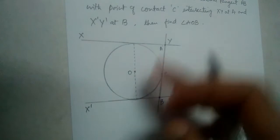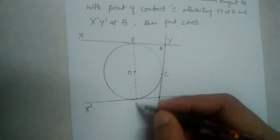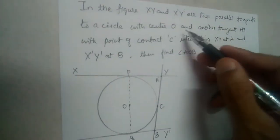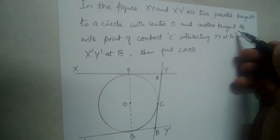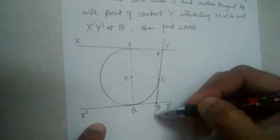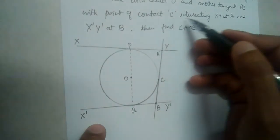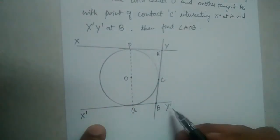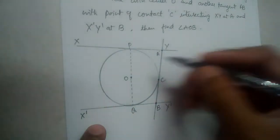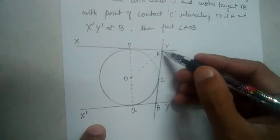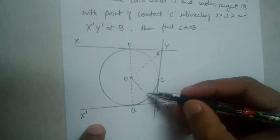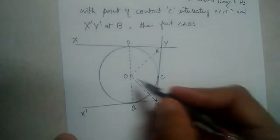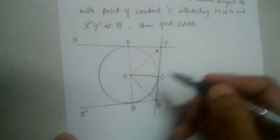Let P and Q be the endpoints, so PQ is the diameter. The center of the circle is O. Another tangent AB with point of contact C is intersecting XY at A and X'Y' at B. We need to find angle AOB. Now, join OC.